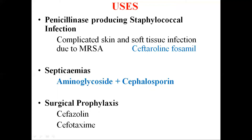In septicemias caused by gram-negative organisms, aminoglycosides can be combined with cephalosporins. For surgical prophylaxis, cefazolin is the most popular drug — it has a longer half-life and good tissue penetration, given by IM or IV injection, and is used for surgeries involving surgical prostheses, artificial heart valves, and artificial joints. The third generation cephalosporin cefotaxime is also used for surgical prophylaxis.